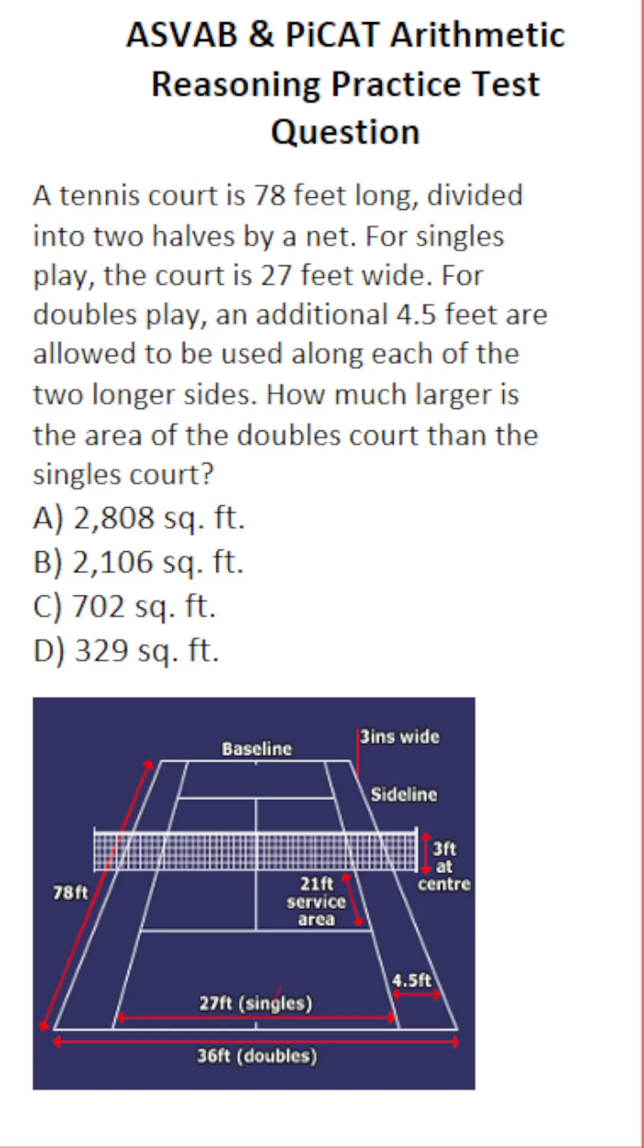So we're talking about a tennis court. Both of those are going to be rectangles, so their areas are going to be length times width. And both courts have a length of 78. So let's go ahead and write that in for both of these areas.